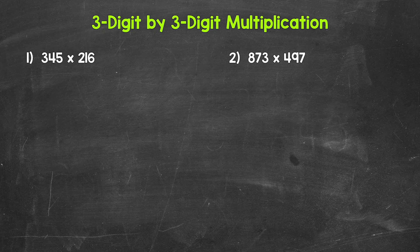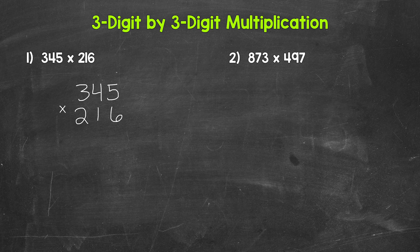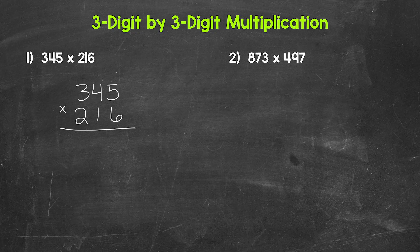Let's jump into number one, where we have 345 times 216. We'll start by setting this up, and all we need to do here is line up the places. So 345 times 216 — the ones places lined up, the tens place, and the hundreds. Now we're ready to multiply. What we're going to be doing here is 345 times 6, 345 times 10 (since that one is in the tens place and has a value of 10), and 345 times 200 (since that two is in the hundreds place and has a value of 200). Then we add those results to get our final answer.